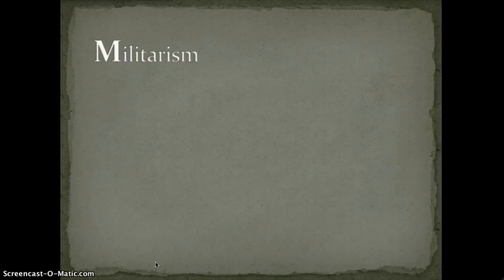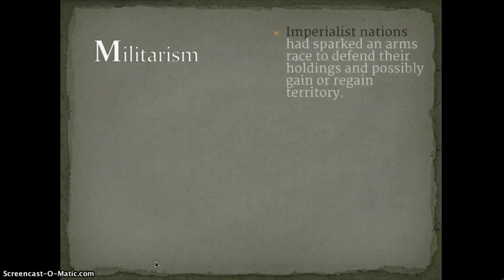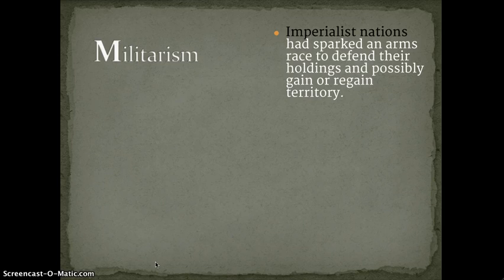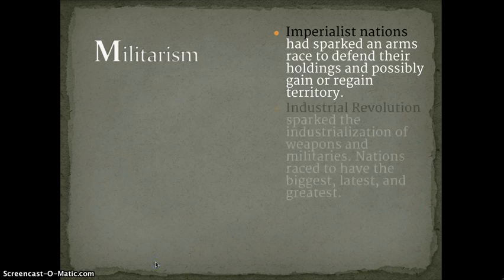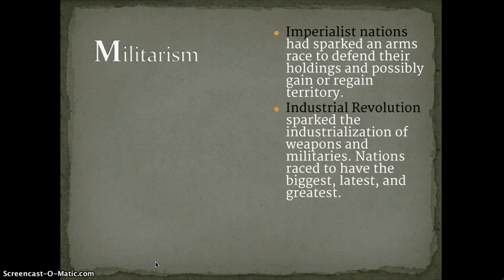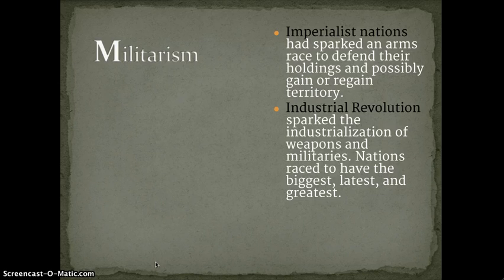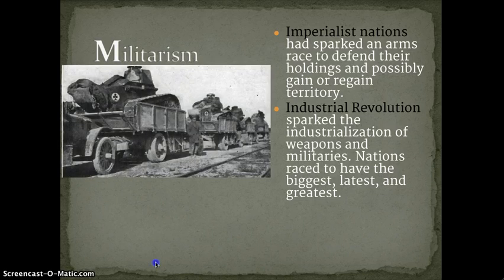The first M in the word MAIN is militarism. These imperialist nations had sparked an arms race to defend their holdings and possibly gain or regain territory. They were flexing their military might all over. The Industrial Revolution sparked industrialization of weapons as well as other things like steam engines and telegraphs. With that came the mass production of weapons, and nations wanted the latest, greatest, biggest weapons they could come up with.